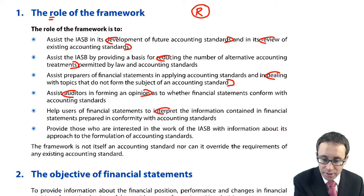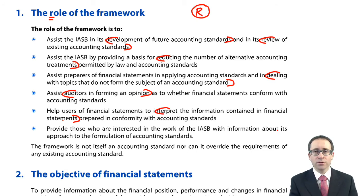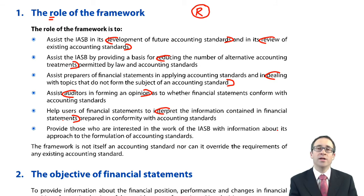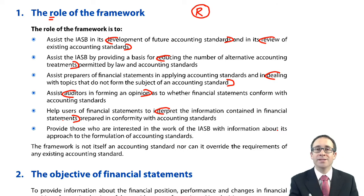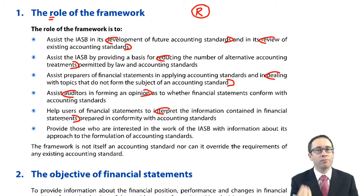The framework also helps you interpret the information contained within financial statements. As you will see in F2, we go through and begin to look at accounting ratios — gross margins, return on capital employed. We can then be confident interpreting those ratios, knowing that the financial statements have been prepared on a basis that is consistent across all entities, having adopted accounting standards that follow a consistent approach.